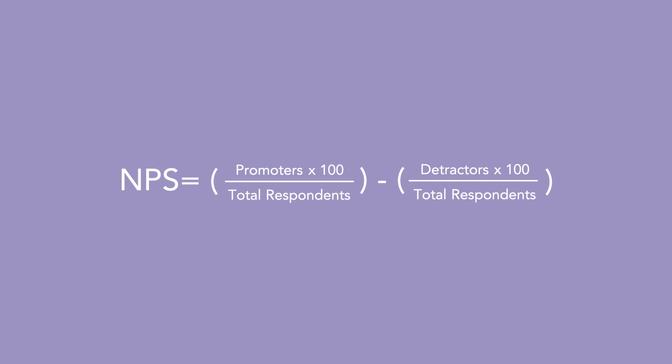Anyone who scores between a 9 and a 10 is considered a promoter. Anyone who scores 7 or 8 would be considered passive, as in unlikely to promote or criticize. And anyone who scores 6 and below would be considered a detractor. Using the responses to this survey, you would calculate NPS with the following formula: the number of promoters (who voted 9 and over) times 100 divided by the total number of respondents, minus the number of detractors (who voted 6 and below) times 100 divided by the total number of respondents.